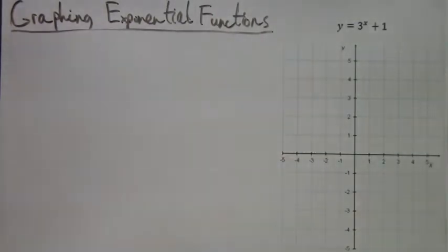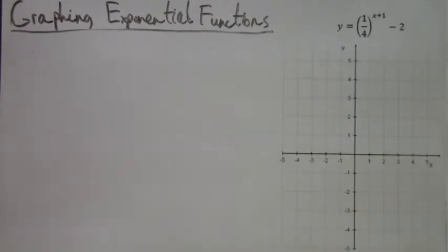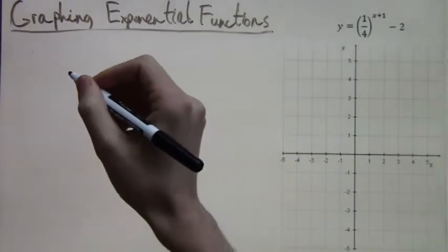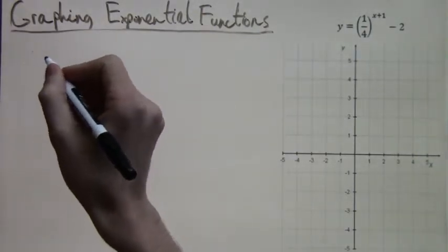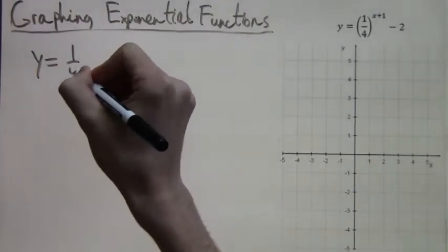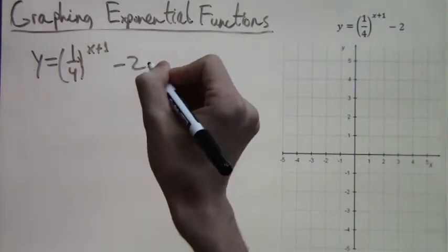So now we're going to take a look at the final example, but it's going to be the hardest one too. One fourth to the x plus one minus two. So this problem has many parts, and we're going to have to break them down a little bit. First, let's start with y equals one fourth to the x plus one minus two.